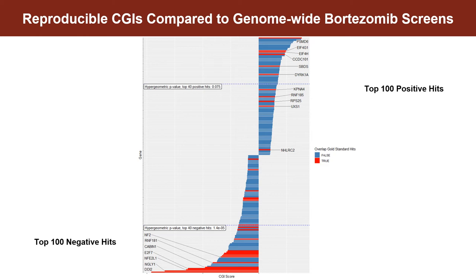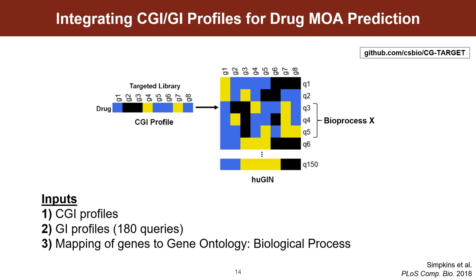To compare the performance of the targeted library to the genome-wide library, I first defined a gold standard hit list from the genome-wide screens. I then looked at the top 100 negative and the top 100 positive hits from my targeted screen. In red, I'm showing where these hits overlap the gold standard hits. I also further did a hypergeometric overlap test on both the positive and negative side, looking specifically at the top 40 hits, and you can see there is an enrichment of gold standard hits on both sides. All of this is to say that these targeted screens are recapitulating the information that we expect from the genome-wide screens.